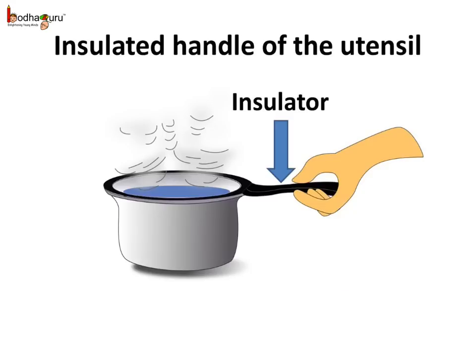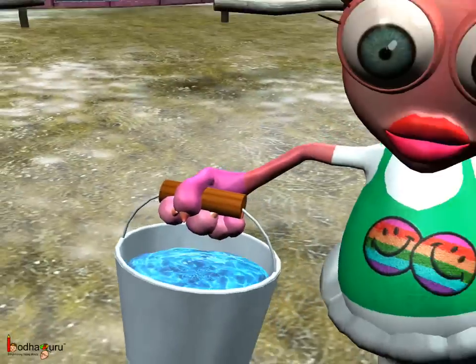Now you can easily tell why there are plastic handles on the utensils which we use for cooking. As we saw, plastic is an insulator, so it does not become very hot when we are cooking food by putting the utensils on the stove. So we can hold and move the hot utensils easily by holding the plastic handle.